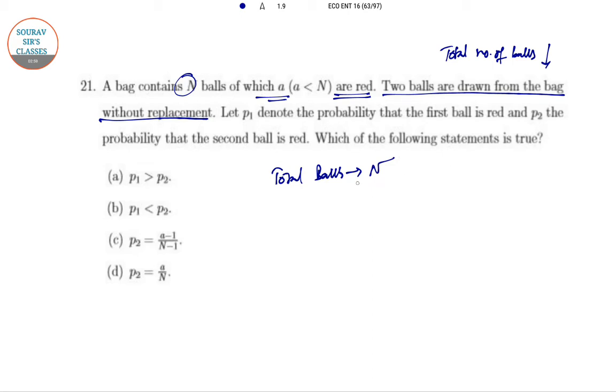Let p₁ denote the probability that the first ball is red, and p₂ the probability that the second ball is red. For p₂, either both balls are red (RR) or the first is not red and the second is red (NR).